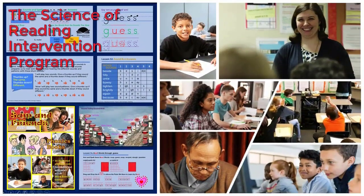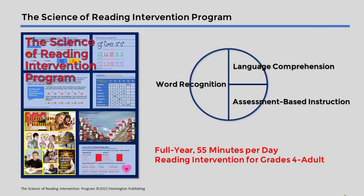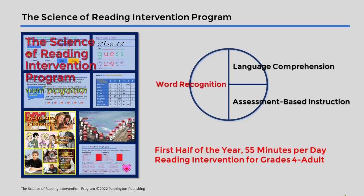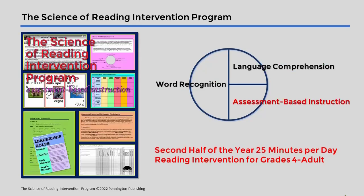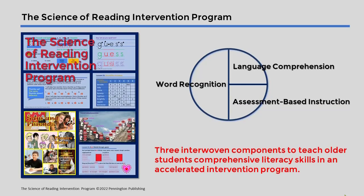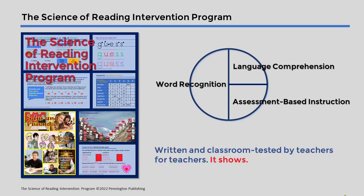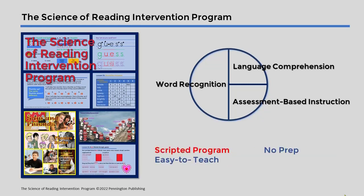The Science of Reading Intervention program has been designed for struggling readers in grades 4 through adult. It consists of three components: word recognition, language comprehension, and assessment-based instruction. It is ideal for EL, ESL, special education, tiers 2 and 3 reading intervention, continuing education, and adult literacy classes.